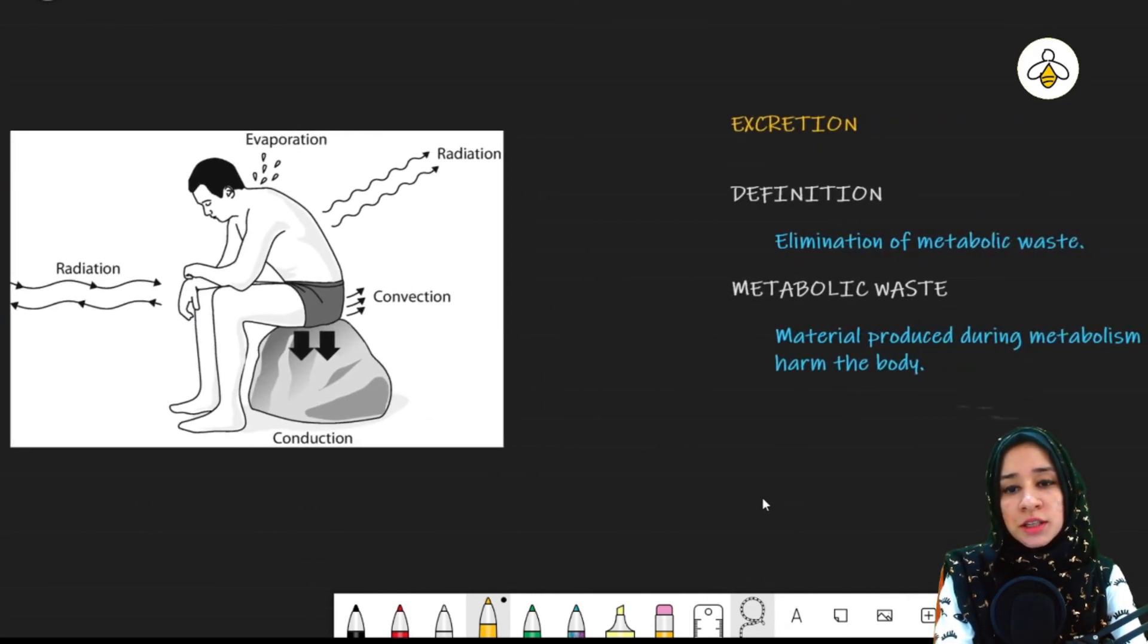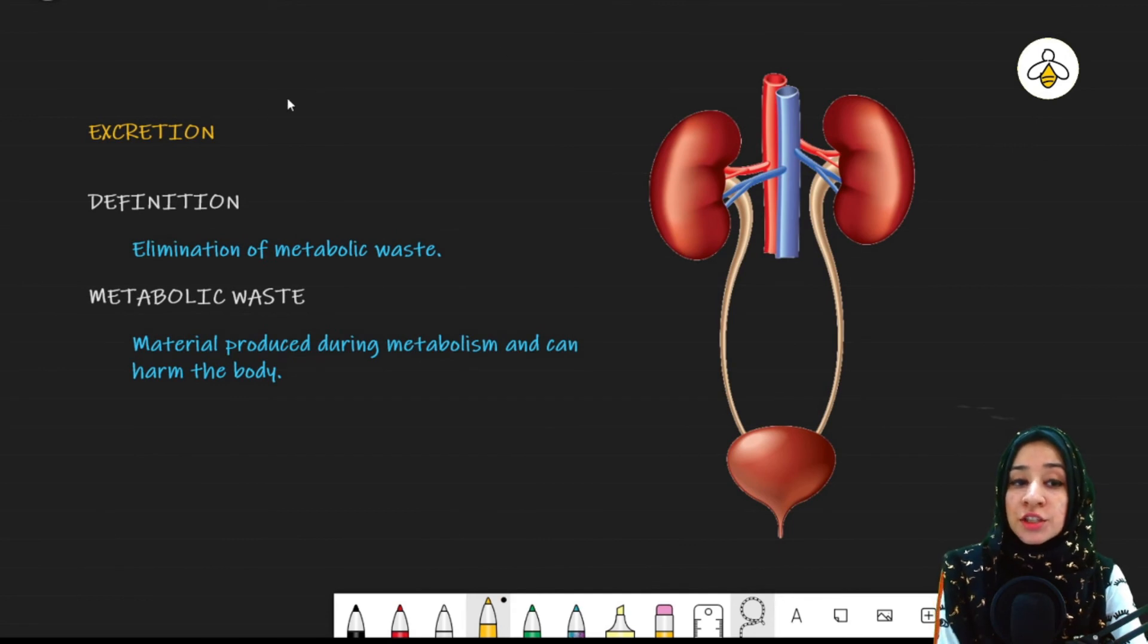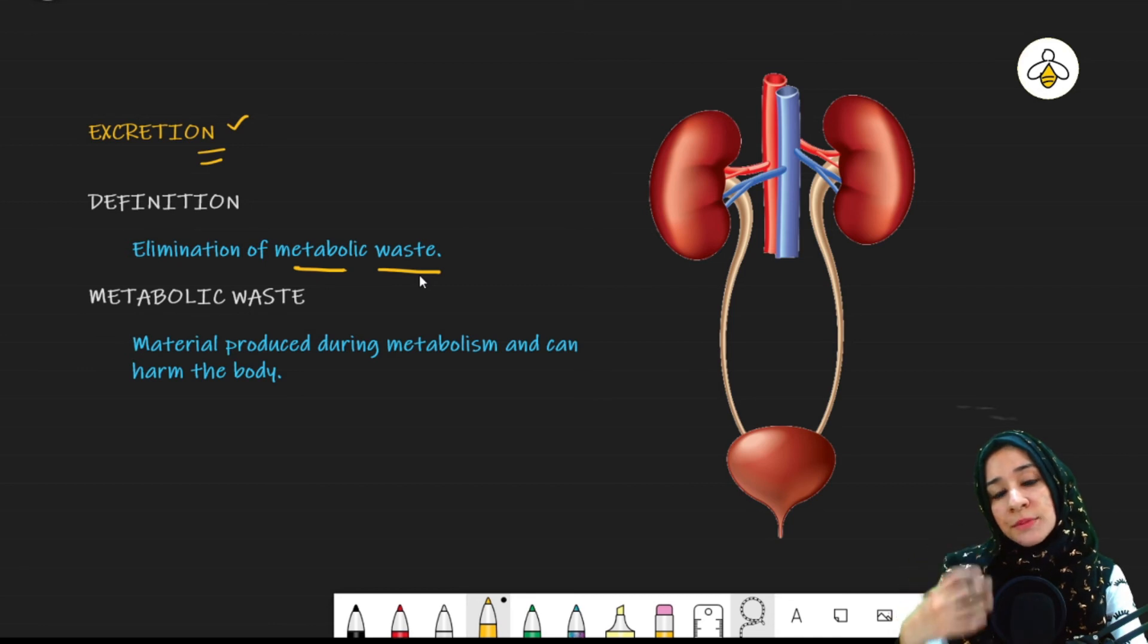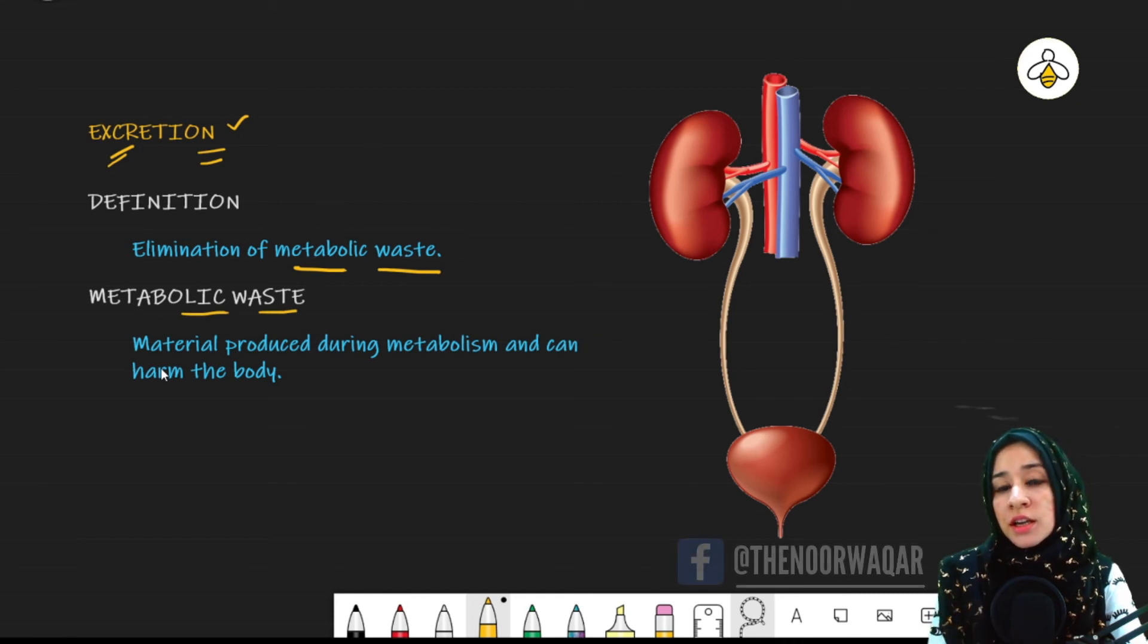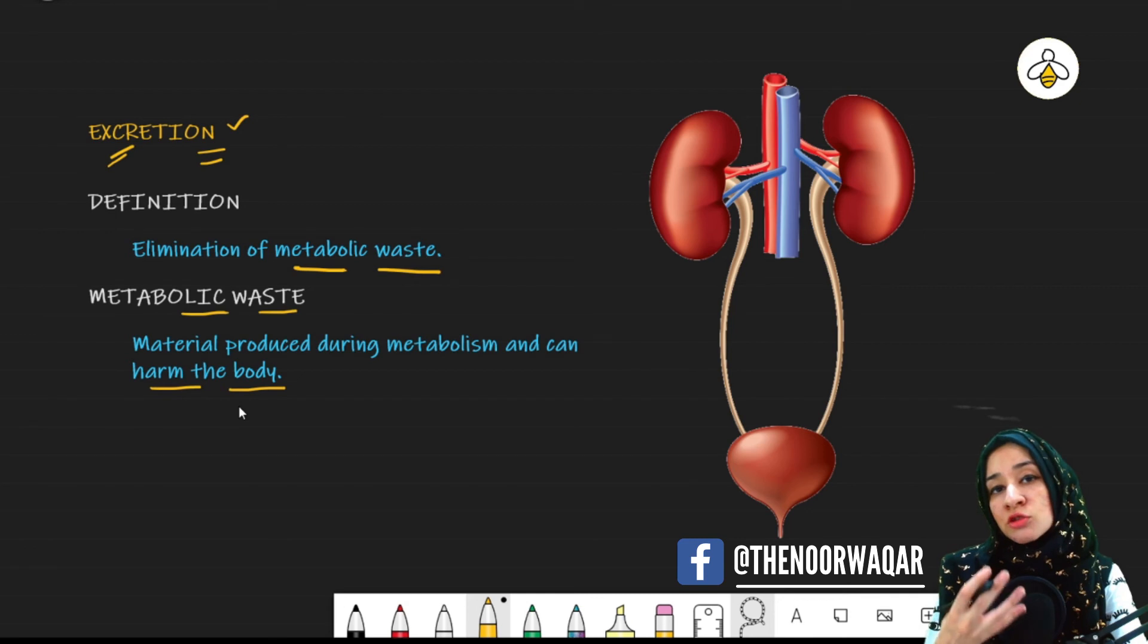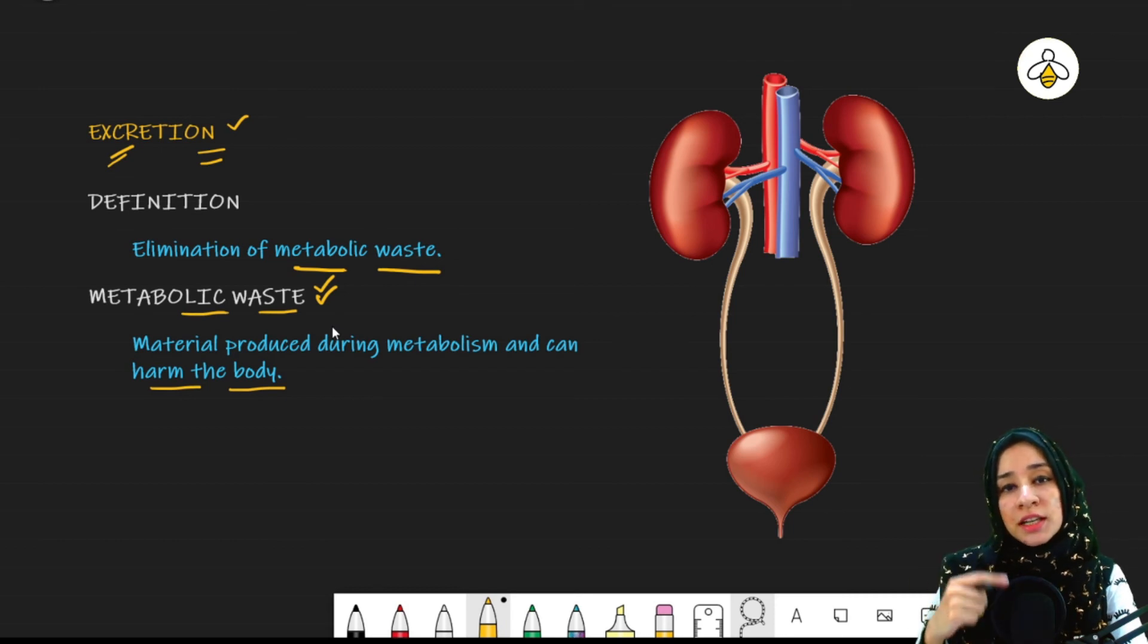So the last process that is involved in homeostasis is the excretion. This is the last process. Now what is excretion? It is the elimination of metabolic waste. Now what is metabolic waste? We will discuss this. What is metabolic waste? These are those materials which are produced during the metabolism of our body, which are harmful for the body, poisonous for the body, and not required by the body. Those are known as metabolic waste. And when we eliminate them from the body, then that process is known as excretion.